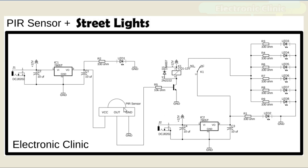When the PIR sensor detects any motion, the relay is turned on, so the common pin of the relay will be connected with the normally open pin, which connects 5 volts with the anode side of the LEDs and so the LEDs will turn on. The relay driver circuit simply consists of the 2N2222 NPN transistor and a 10K resistor. If you want to learn the relay driver circuit design calculations, watch my tutorial — the link is given in the description.